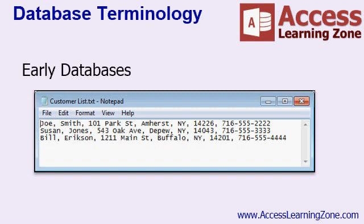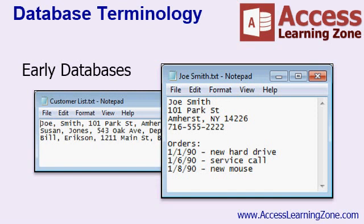When the first computers came along, the earliest databases were really nothing more than glorified text documents. They were great at storing information, and they certainly made searching and sorting easier. However, they lacked many features we take for granted today, such as the ability to recognize relationships between the different types of data. For example, you could have a list of customers with some basic details, but if you want to look up information on their purchases, you would have to look in a different file. The earliest databases had no way to relate this information together, creating problems including multiple copies of the same information in different places. Fortunately, Microsoft Access does recognize relationships — that's one of its strong points, but much more on that later.